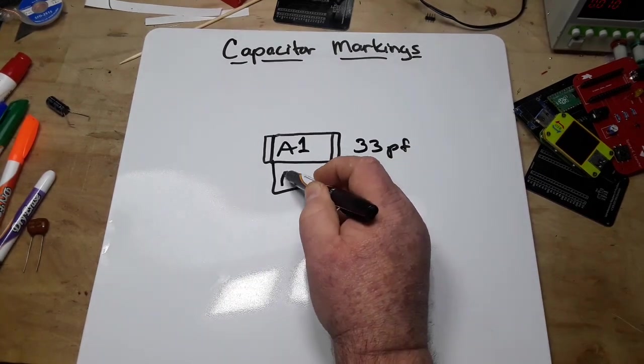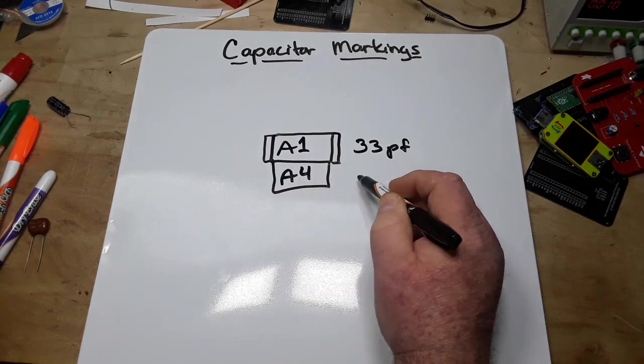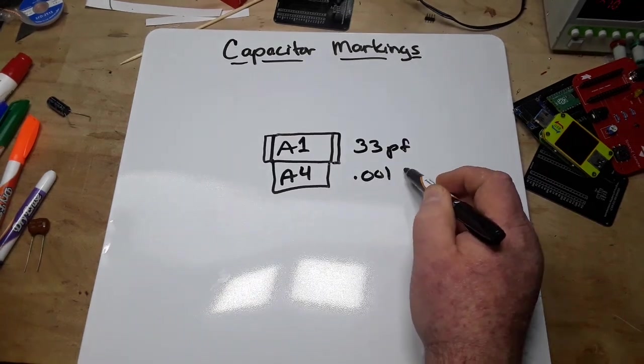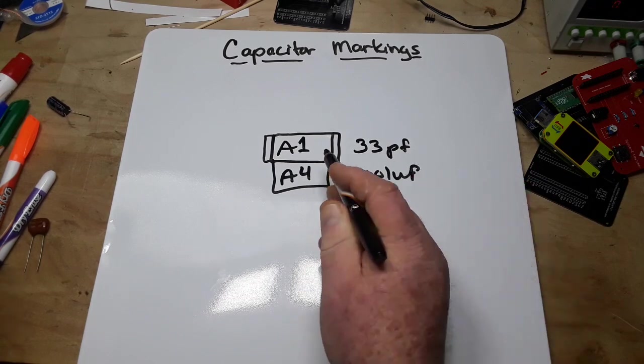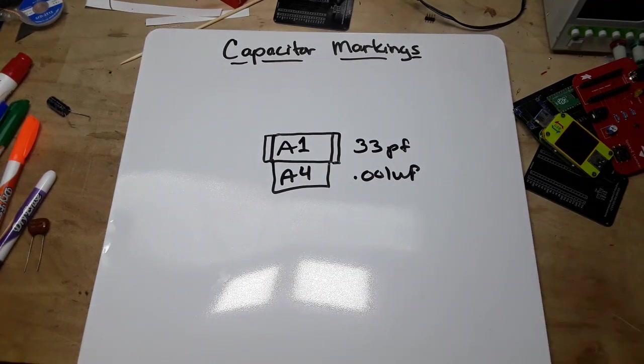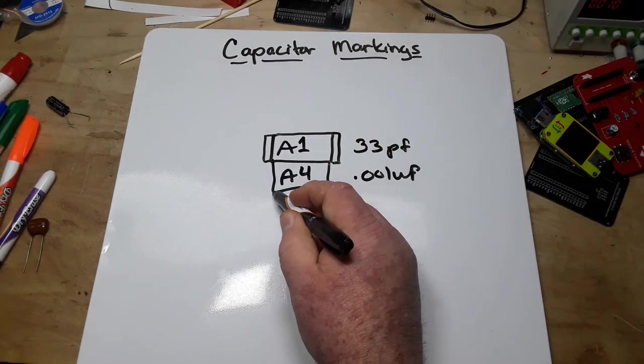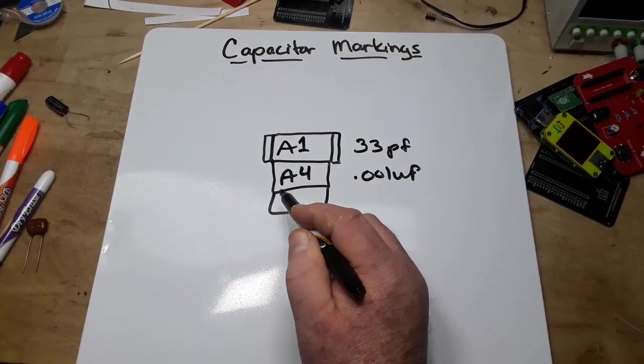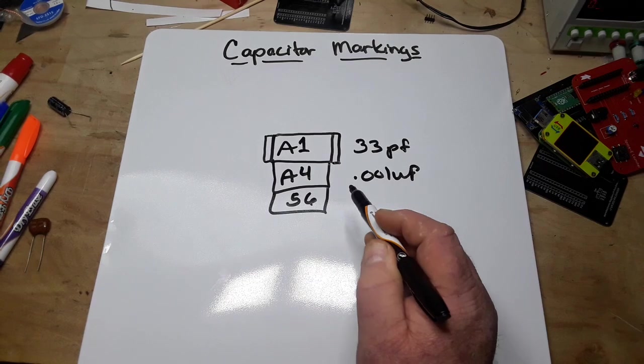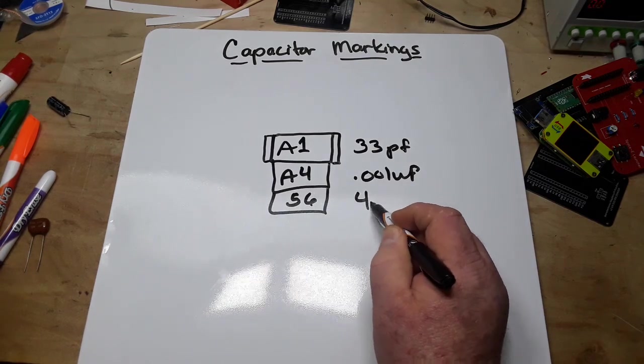If you have one that says A4, that would be 0.001 microfarad. For those, you're just going to have to look them up because I don't really figure any rhyme or reason to them. Like the next one which might say 56 is actually 4.7 picofarad.